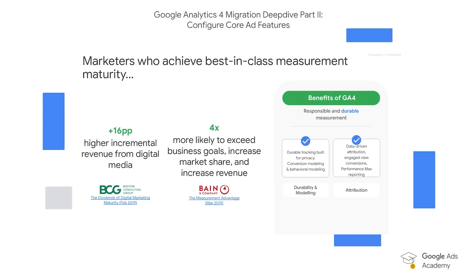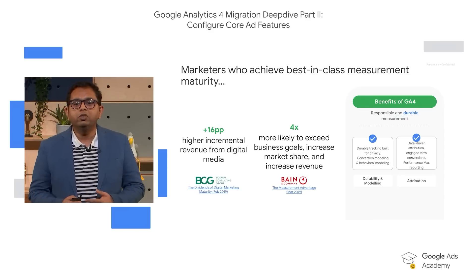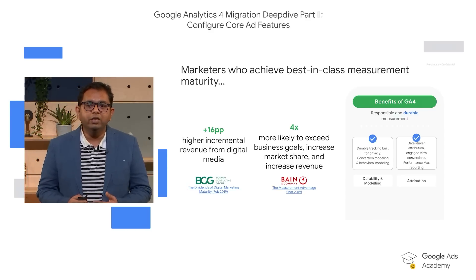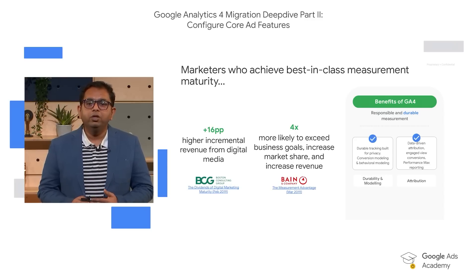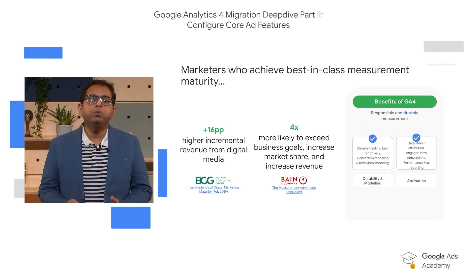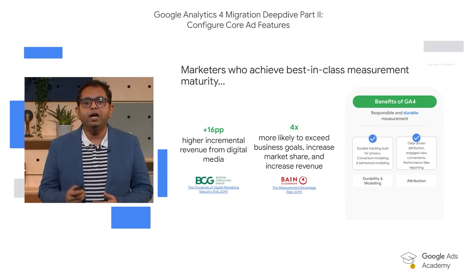GA4 has many new features inbuilt which can greatly help you improve your measurement. GA4 can help you better understand ROI of your media investments. GA4 has improved durability and modeling capabilities which can help you measure full impact in a privacy-first environment with fewer cookies. GA4 also has new advanced features such as data-driven attribution and engaged view conversions which will help you understand the full customer journey. To use these features for your campaign activations, you will have to import GA4 conversion data in Google Ads and use it with Smart Bidding.